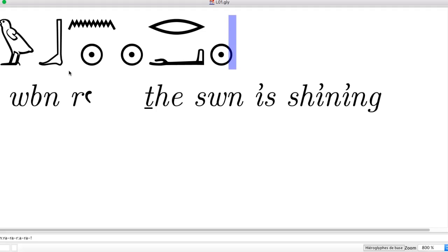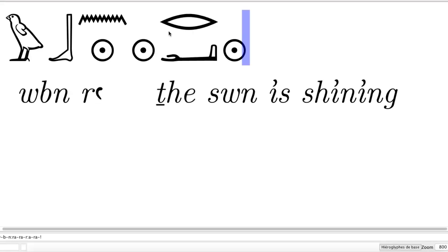In Egyptian, sentences start with verbs — it's verbs first. Then we're going to see the subject of the verb. We're going to have W-B-N, then A-Y-N, and another determinative in the shape of a sun.